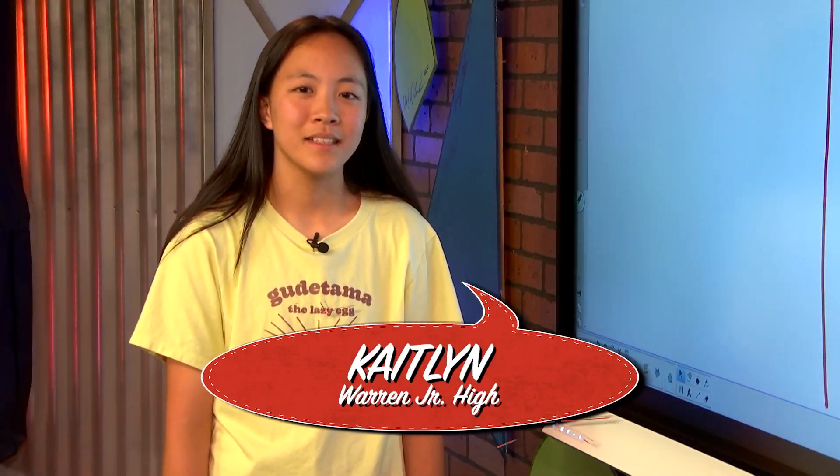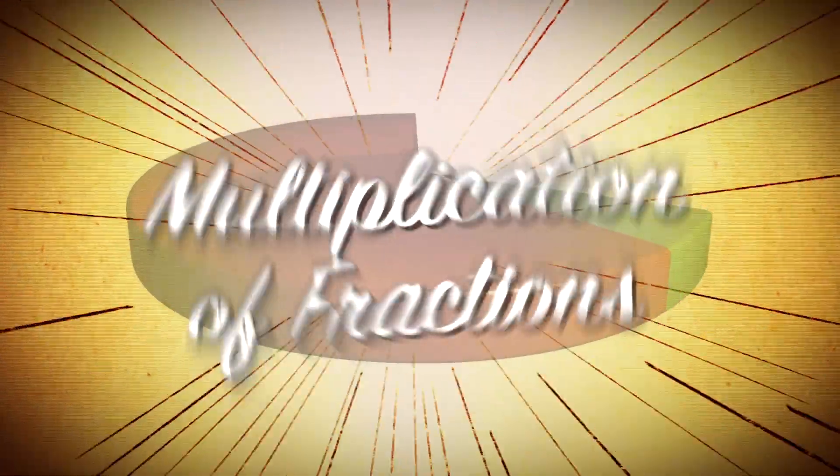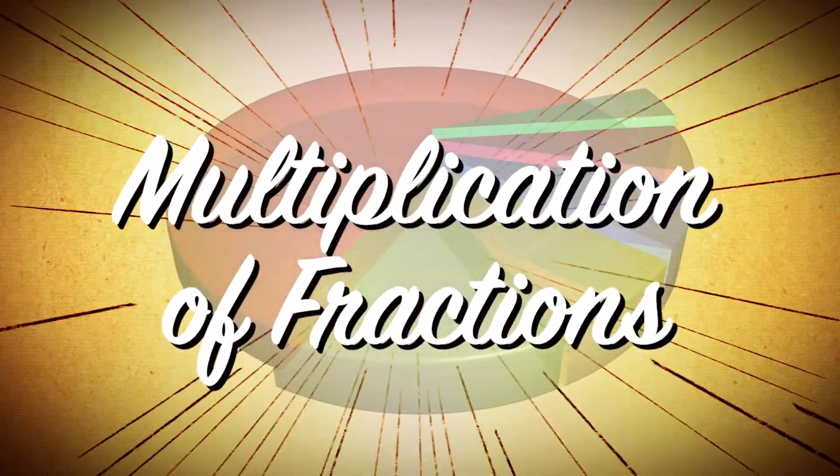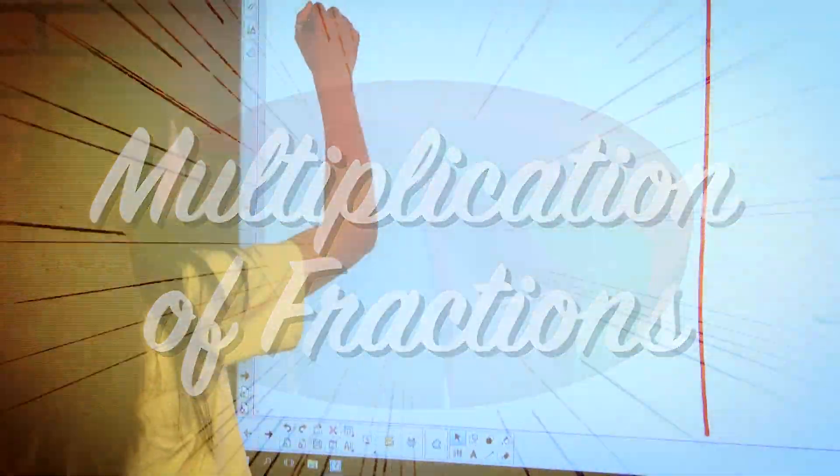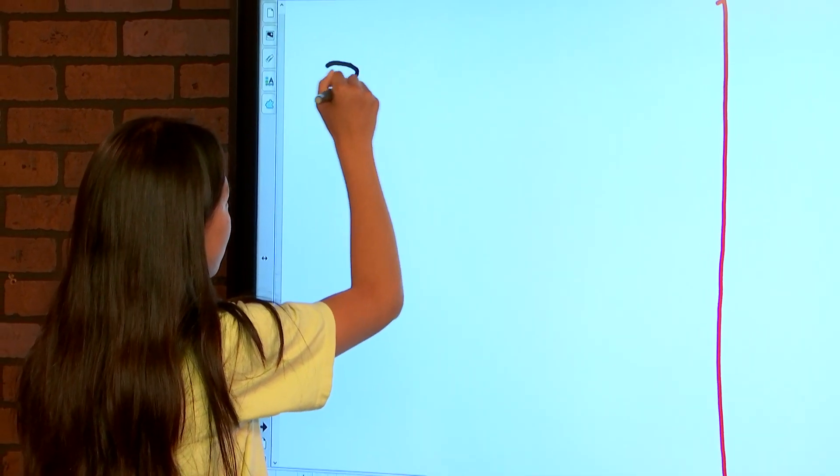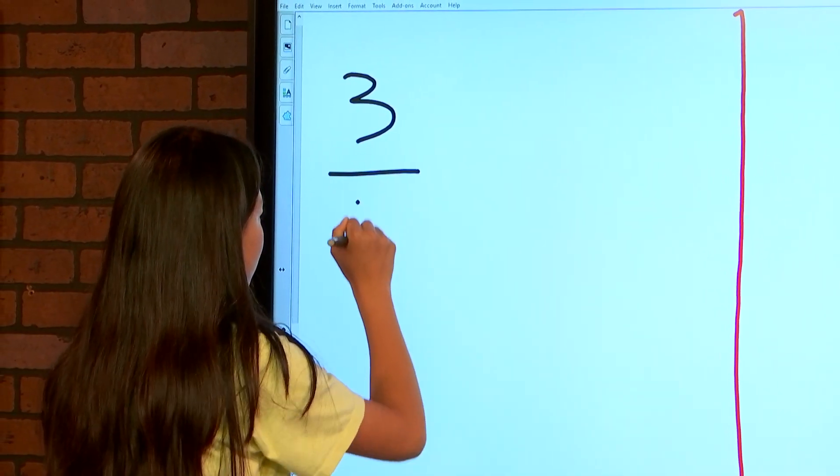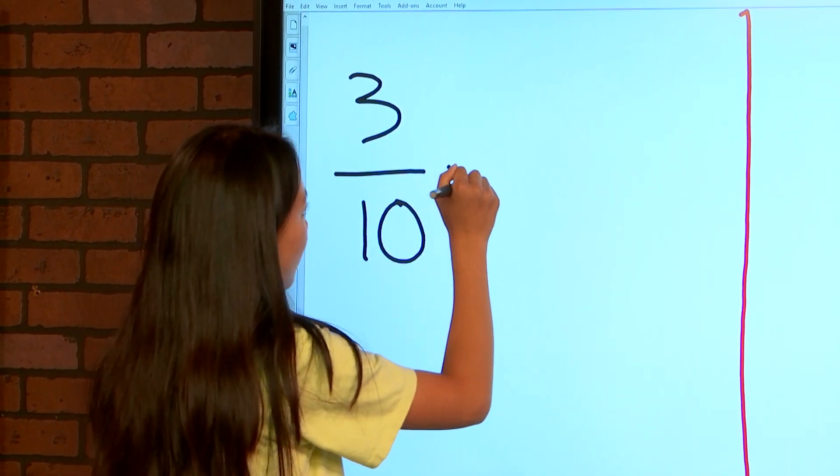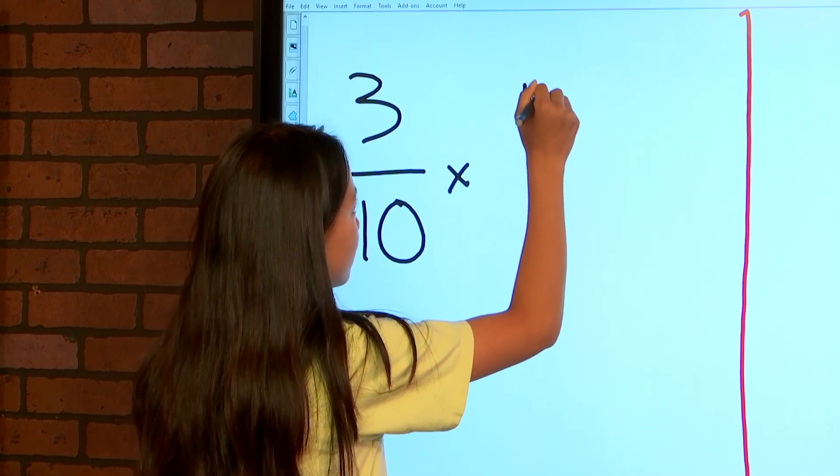Hi, my name is Caitlin, and today I'm going to show you two different ways on how to multiply fractions. Okay, so we're going to start on this side, and I'm going to show you one of the ways. So we're going to start with 3 tenths times 4 ninths.